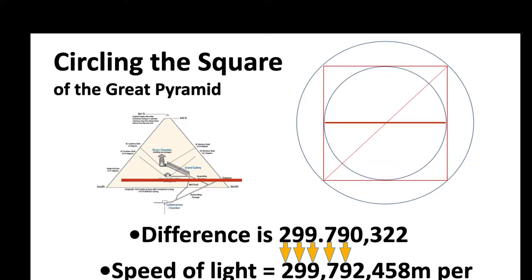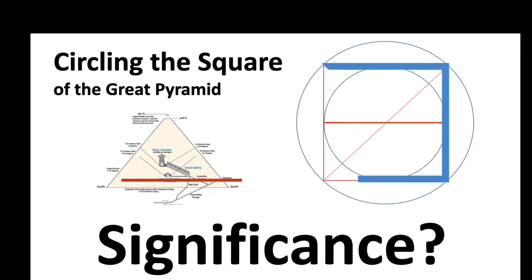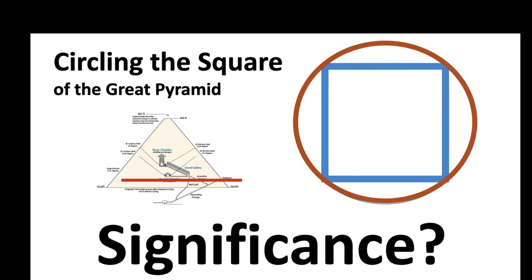I want to interpret this. In this channel, we try to unlock secrets, discover things, unpack and decode things. Why this circling of the square? What's the connection to the speed of light? We've got three elements here: the square of the Great Pyramid, the exoscribed circle, and the inscribed circle. It's a trinity of things.